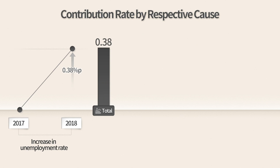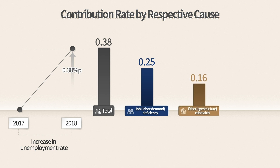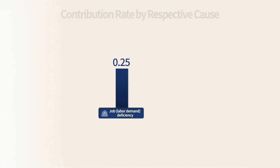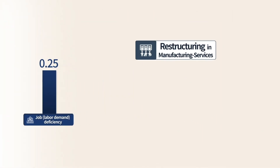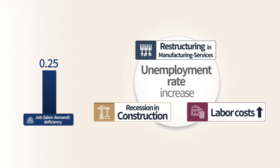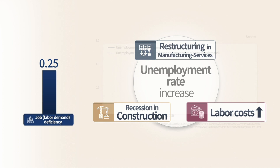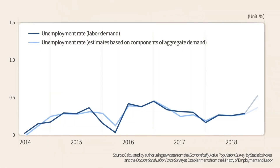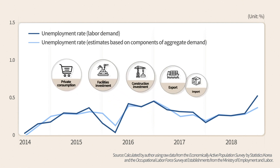In 2018, the unemployment rate is rapidly climbing. Using up-to-date statistical data and the same analysis methods, it was found that changes in the current unemployment rate are being driven firstly by the lack of jobs, then other mismatch, and finally industry-level mismatch. The restructuring of manufacturing and service industries, recession in construction, and rising labor costs seem to be exacerbating the shortage of jobs. With the exception of the third quarter of 2018, the unemployment rate has become very sensitive to economic fluctuations.